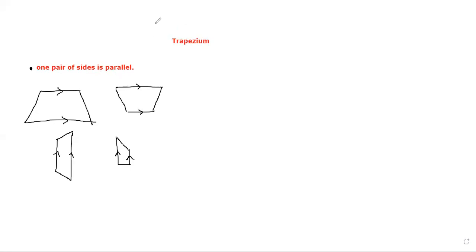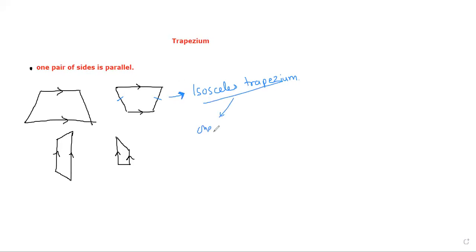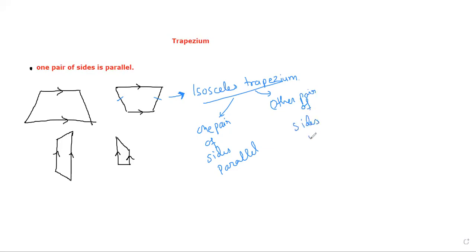At times they give you one more information: the non-parallel sides are equal. So that kind of trapezium becomes an isosceles trapezium. The term isosceles trapezium means one pair of sides parallel, and the other pair of sides is equal.